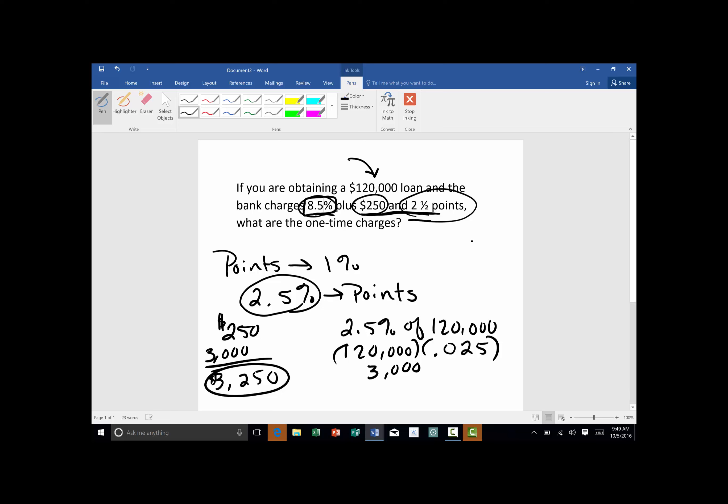And when they talk about points, if it said 3 points, it would be 3%. If it said 4 points, it would be 4%. So each point is equal to one percentage point.